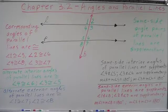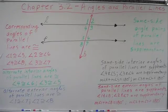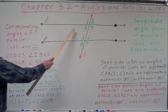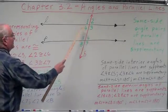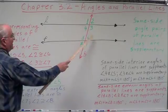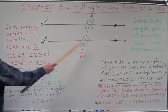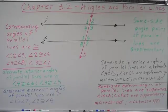Other angle relationships that are also congruent: alternate interior angles of parallel lines are congruent. Alternate means on opposite sides of the transversal, with one angle next to each of the parallel lines. So angles four and six are congruent, and angles three and five are congruent. These are known as alternate interior angles.